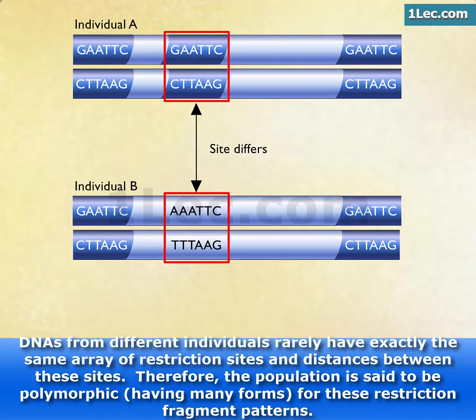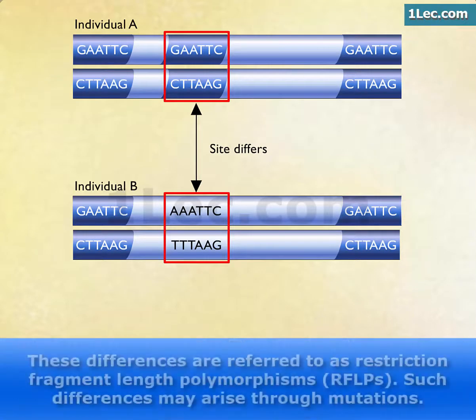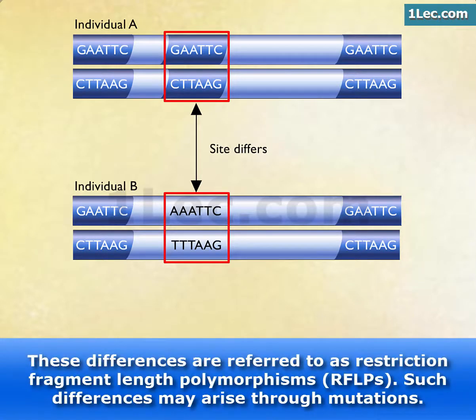Therefore, the population is said to be polymorphic, having many forms for these restriction fragment patterns. These differences are referred to as Restriction Fragment Length Polymorphisms. Such differences may arise through mutations.